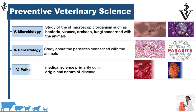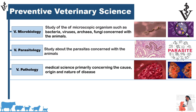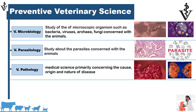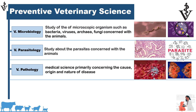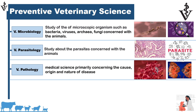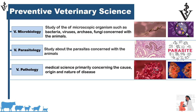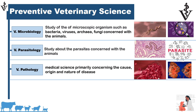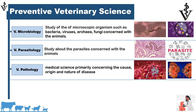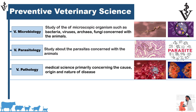Veterinary pathology is a science in which we study the cause, origin, and nature of disease. In veterinary pathology, we study what type of changes take place in the animal body during disease and how disease happens in the animal body.